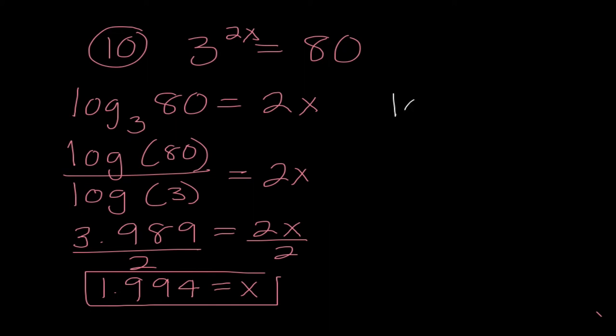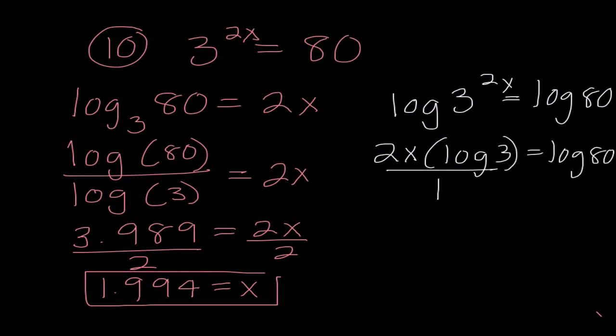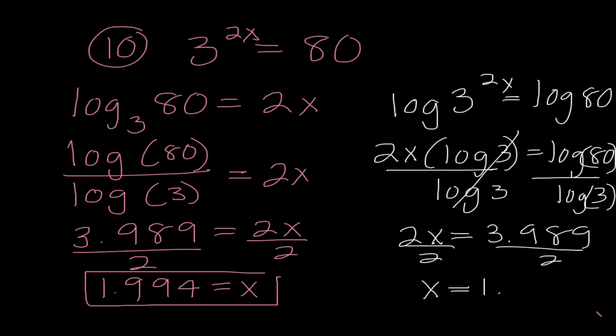If I was using our other method, log of 3 to the 2X equals log of 80. So, I get 2X times log of 3 equals log of 80. I would divide both sides by log of 3. I need my parentheses. Those cancel out. So, I get 2X equals 3.989. When I divide both sides by 2, I get X equals 1.994.